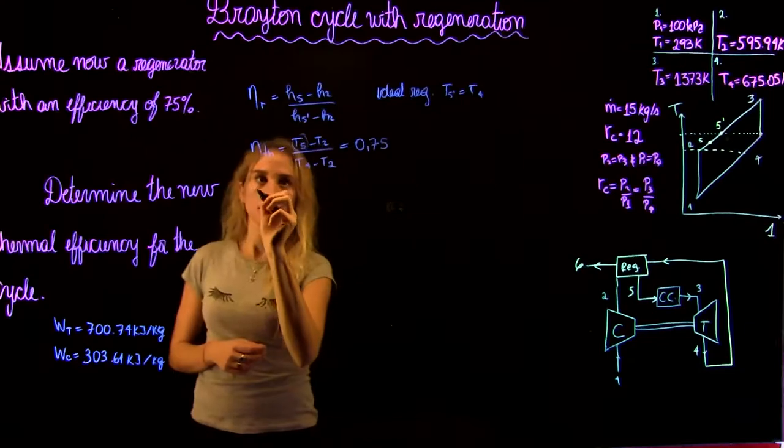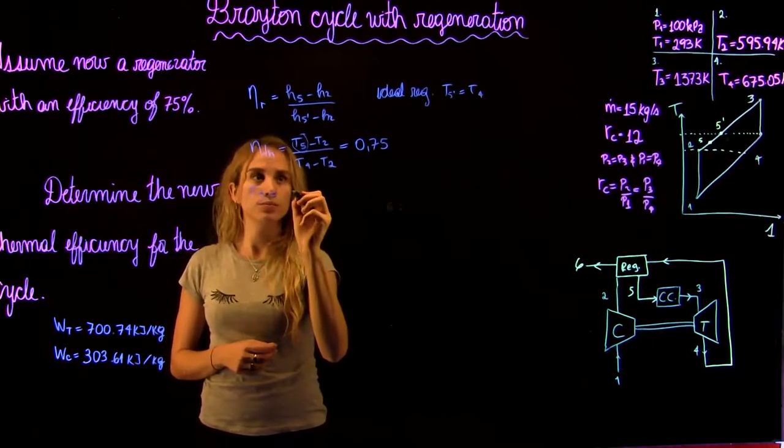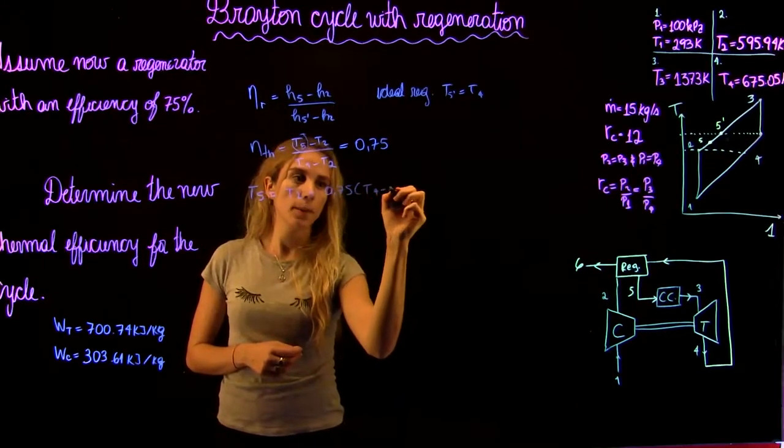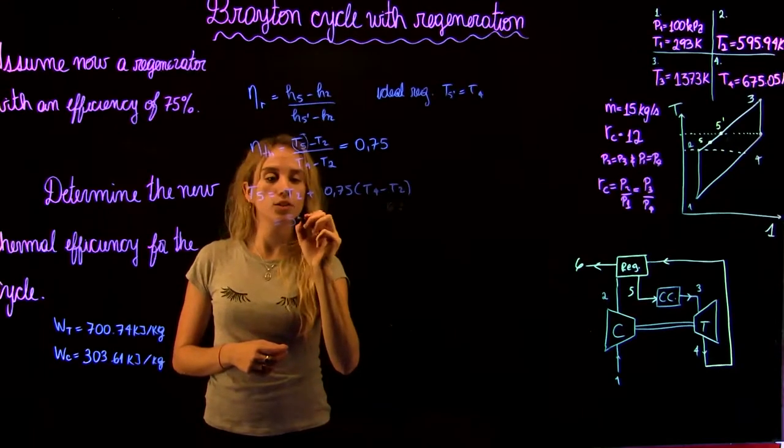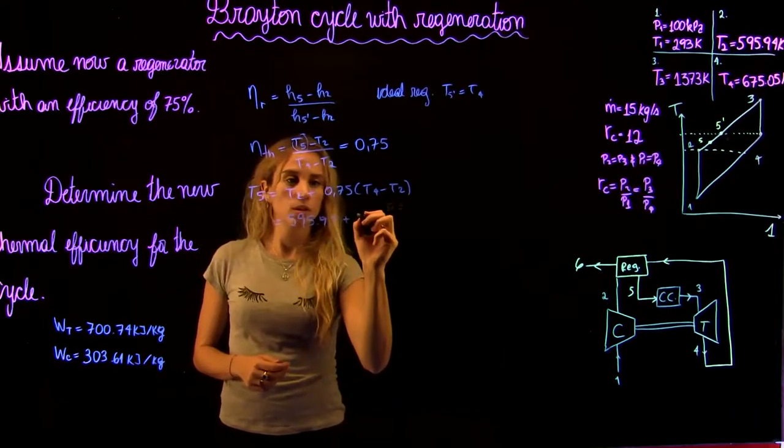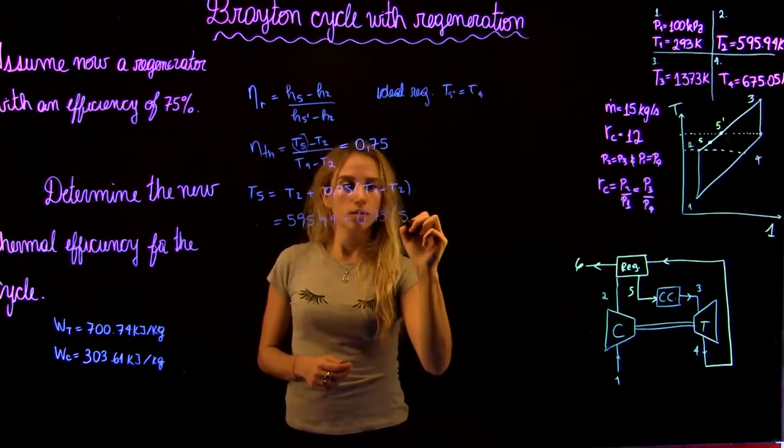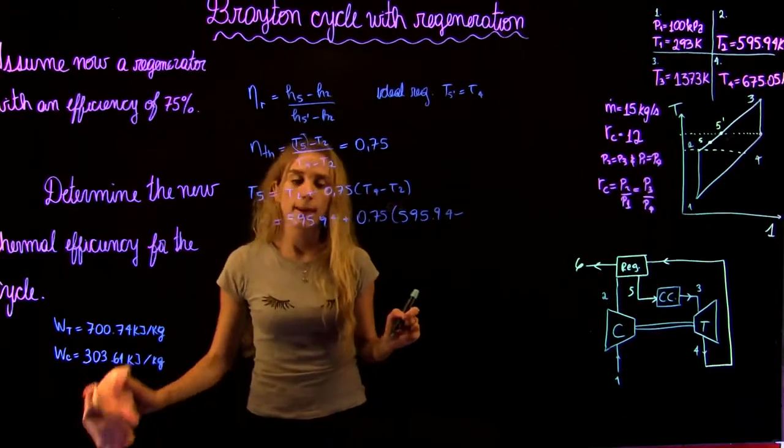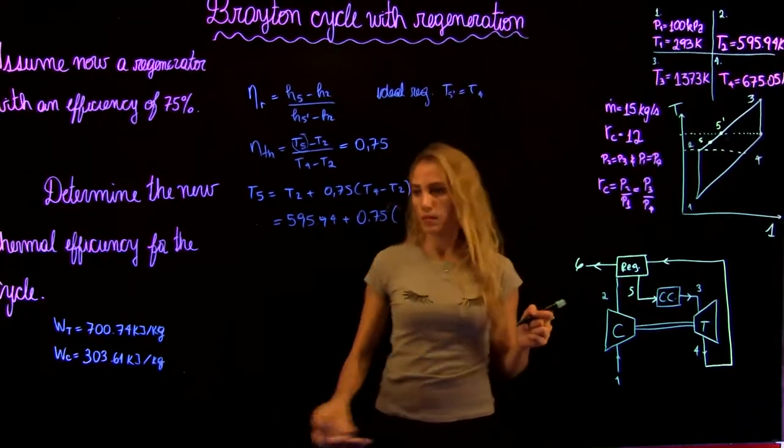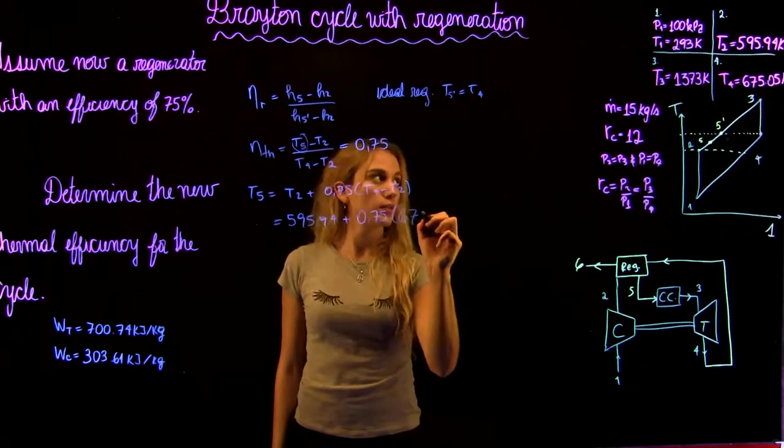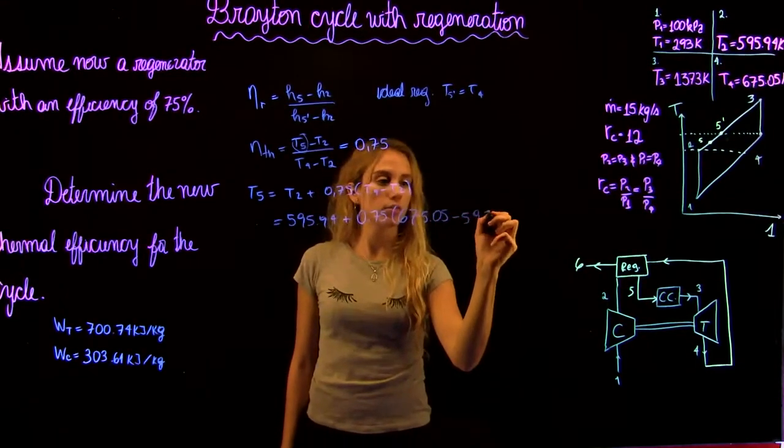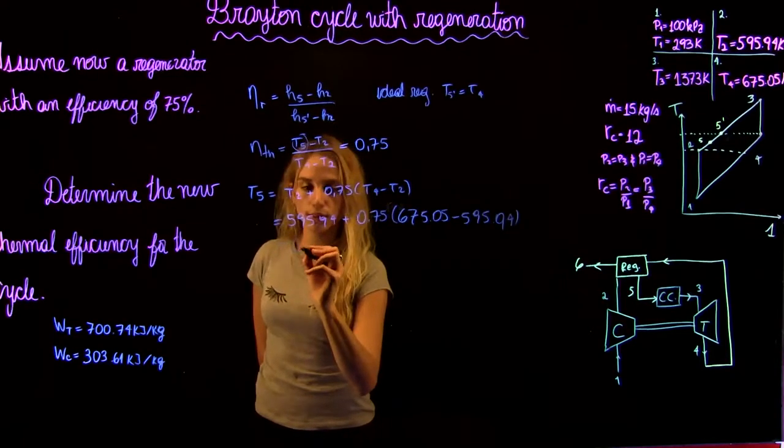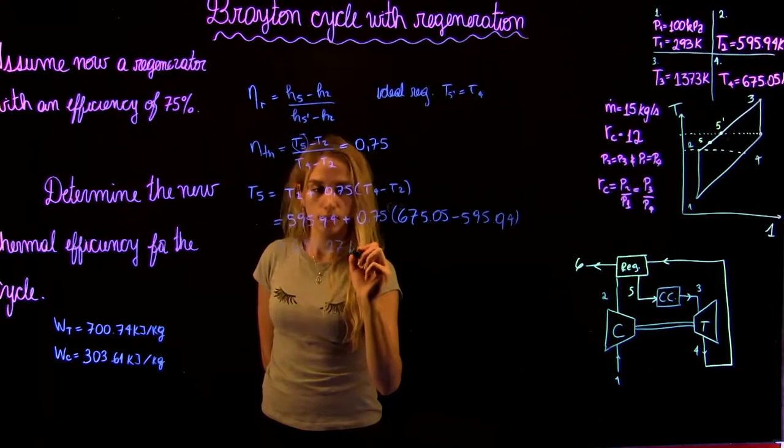Now we can solve for t5. We know that t5 is equal to t2 plus 75% times (t4 minus t2). t2 is 595.94 plus 75% times 595.94 minus—no, this is t4—t4 is 675.05 minus 595.94. This gives us a temperature at 5 of 655.27 kelvins.